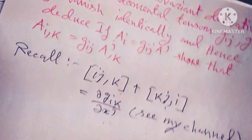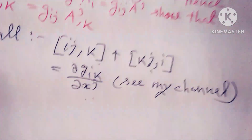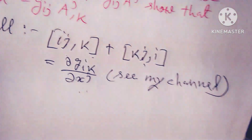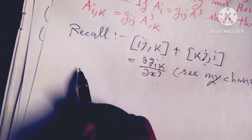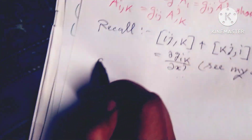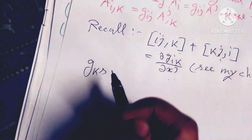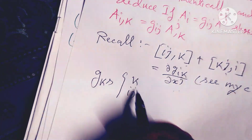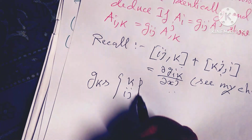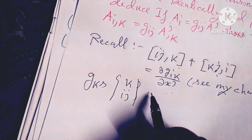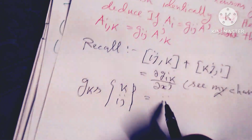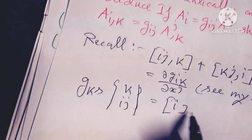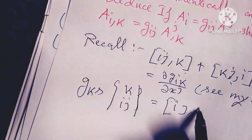Another identity to recall: the Christoffel symbol of the second kind, expressed as g^ks [jk, s] + g^ks [ik, s], equals the Christoffel symbol [ij, s] in raised-index form.